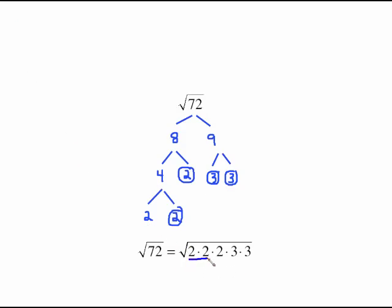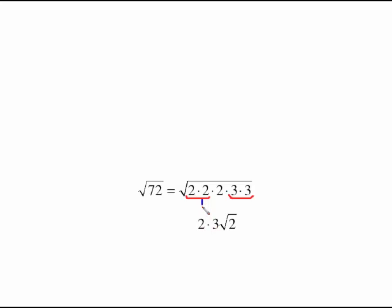We have two different pairs. We have a pair of 2s. We have a pair of 3s. Both of those pairs are going to come outside. So we have a 2 coming out because of that pair of 2s. We have a 3 coming out because of that pair of 3s, but we have this leftover 2. And the 2 times the 3 on the outside gives us 6 times the square root of 2.